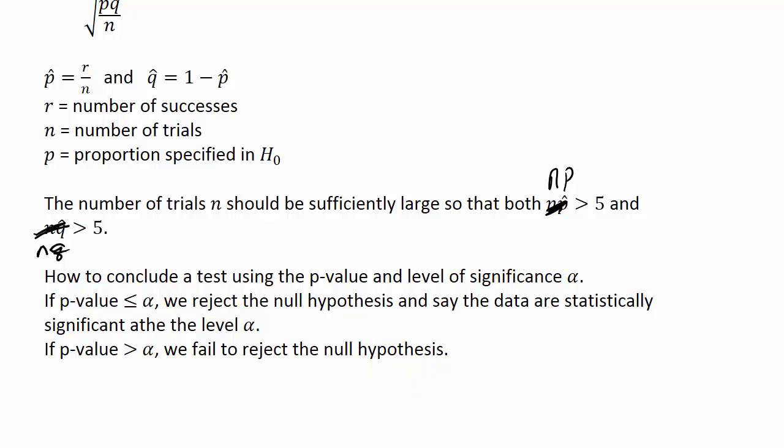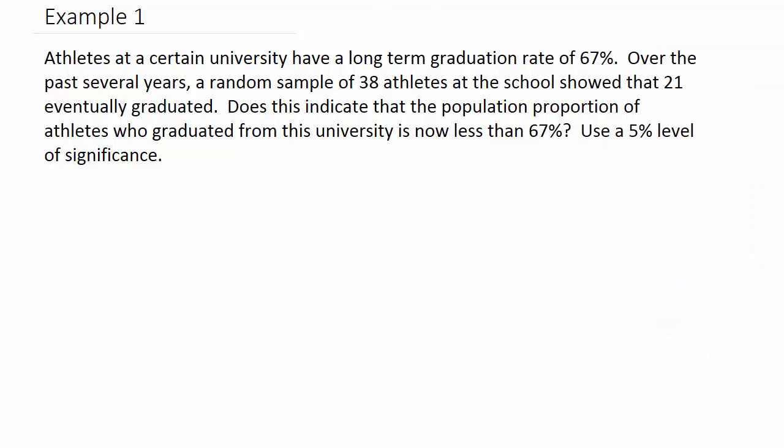Alright, so let's take a look at our example. It says athletes at a certain university have a long-term graduation rate of 67 percent. Over the past several years, a random sample of 38 athletes at the school showed that 21 eventually graduated. Does this indicate that the population proportion of athletes who graduated from this university is now less than 67 percent? Use a five percent level of significance. The 67 percent is the long-term rate over years and years, but over the past several years, they sampled 38 athletes, and of those 38, 21 graduated.